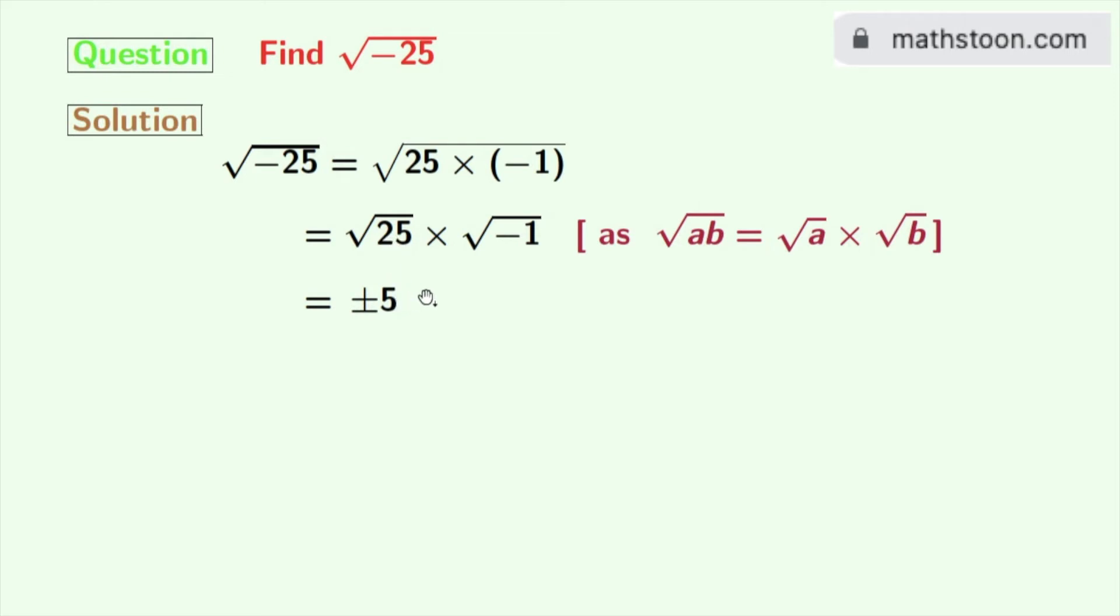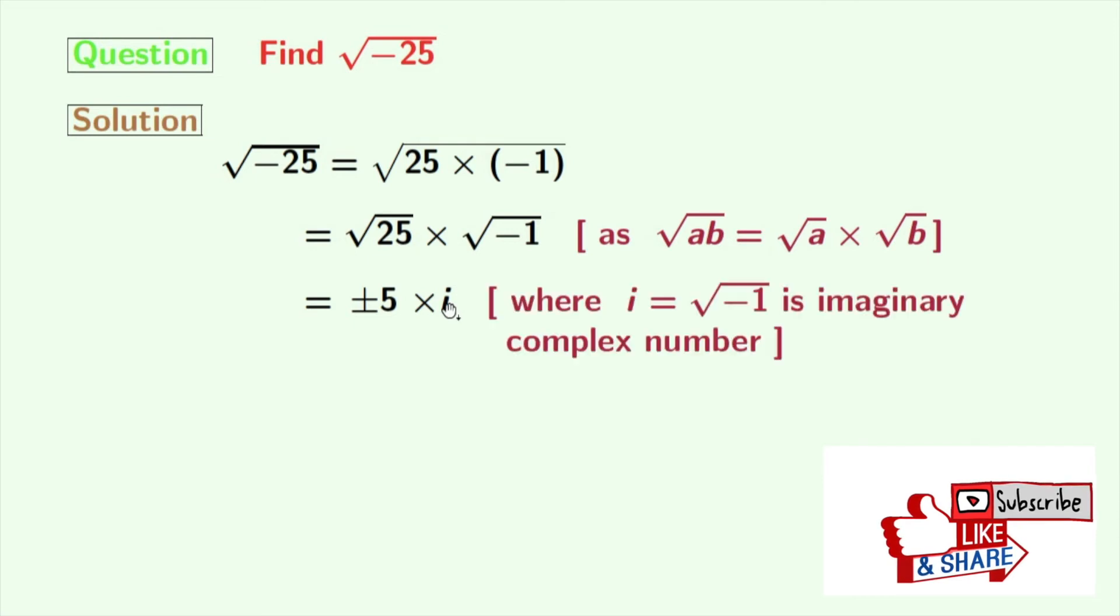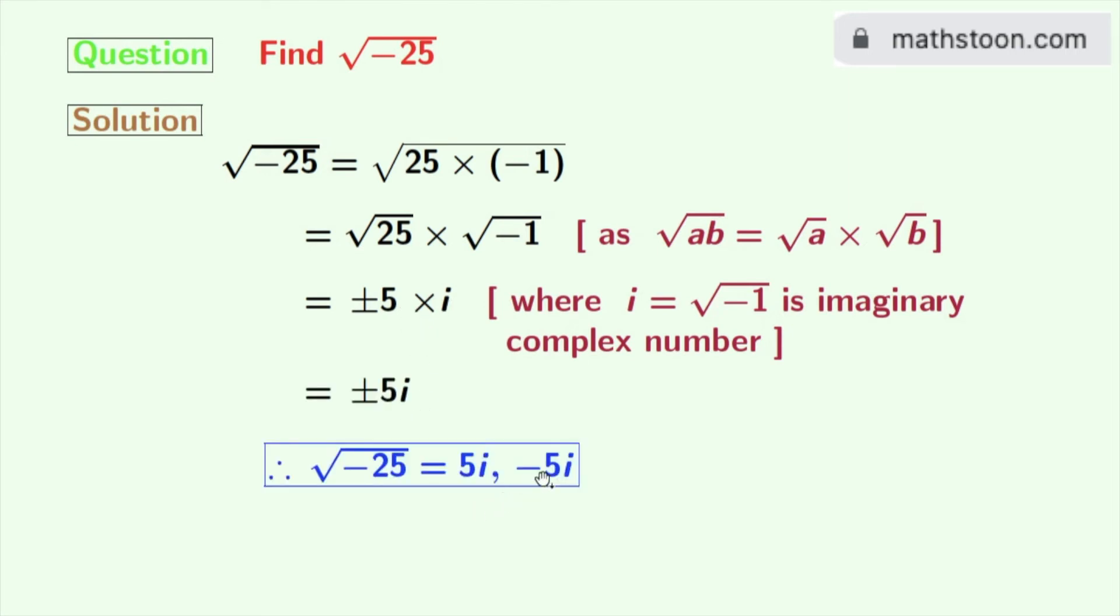And square root of minus 1 is i, where i is an imaginary complex number and its value is root over minus 1. So now we will multiply this. Doing so we get plus minus 5i. So finally, square root of minus 25 is either 5i or minus 5i.